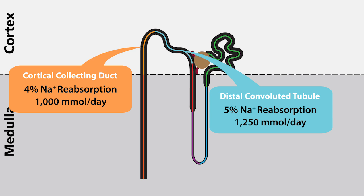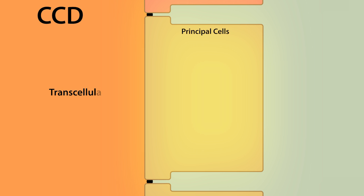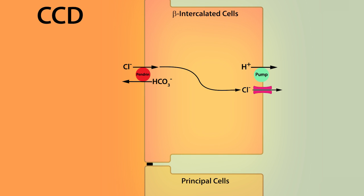Sodium reabsorption along the cortical collecting duct occurs transcellularly as well, via epithelial sodium channels or ENaC, which are located in the apical membrane of principal cells. Neighboring beta intercalated cells do not reabsorb sodium, rather they reabsorb chloride via the bicarbonate chloride exchanger, which is referred to as pendrin. We'll talk more about that in another lesson.